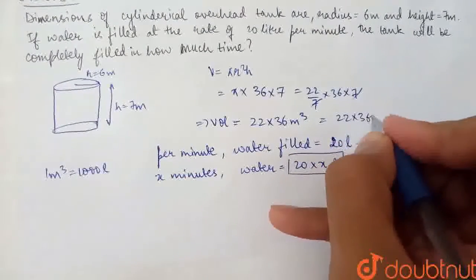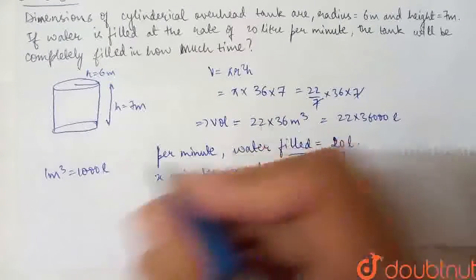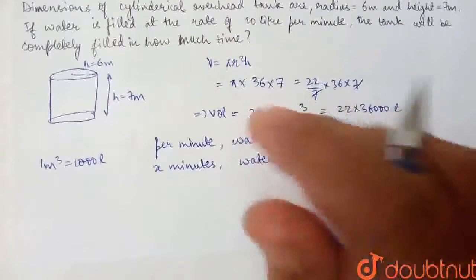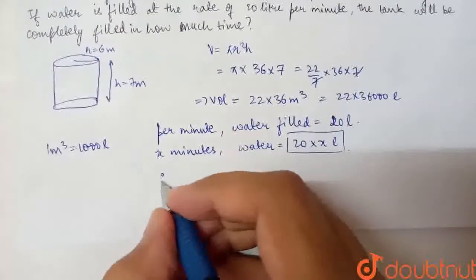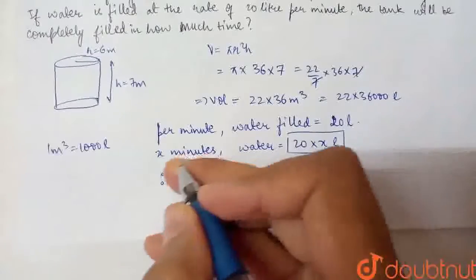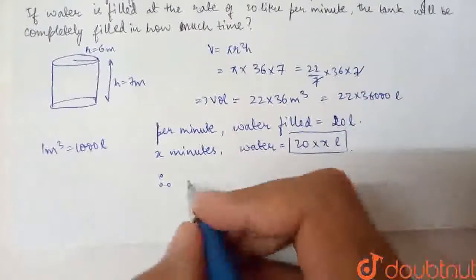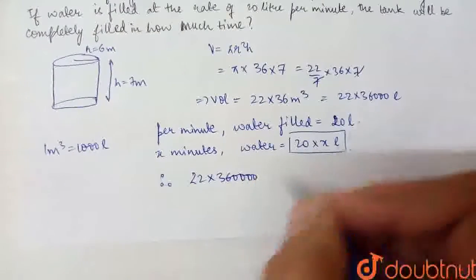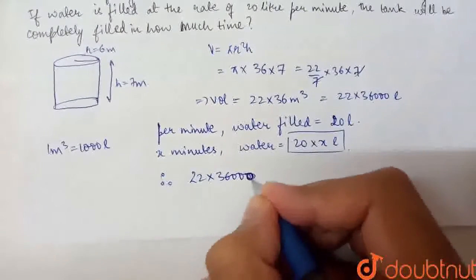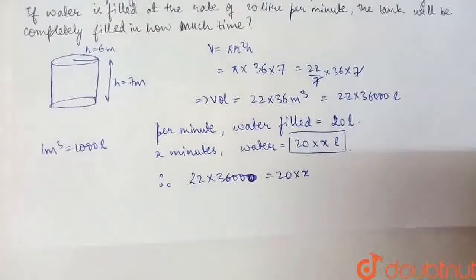So we have 22 into 36 into thousand, that's 36 thousand. So 1 meter cube equals 1000 liters. Now the volume will be filled in x minutes. Therefore my total volume in x minutes is 22 into 36000 equals 20 into x.